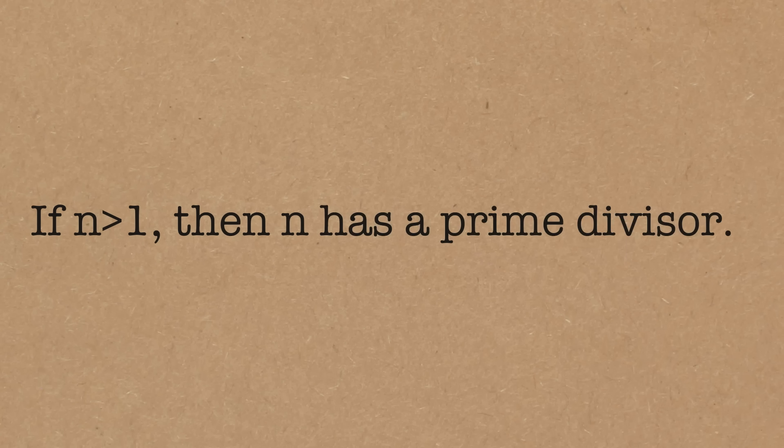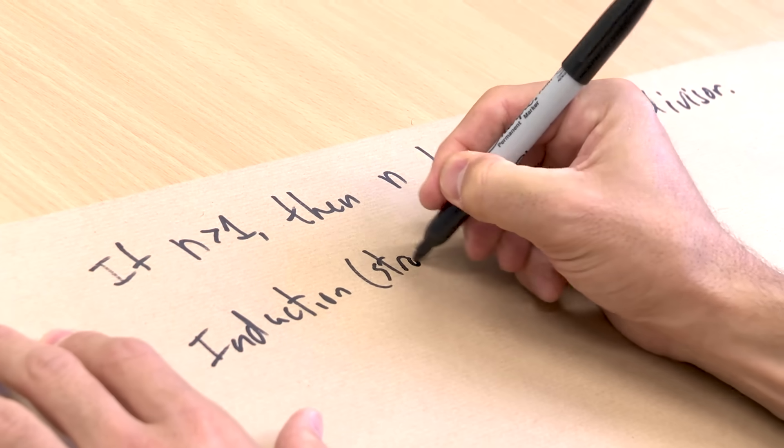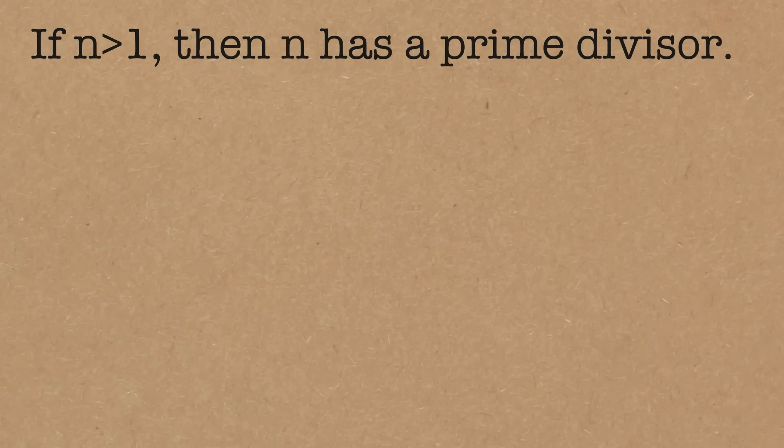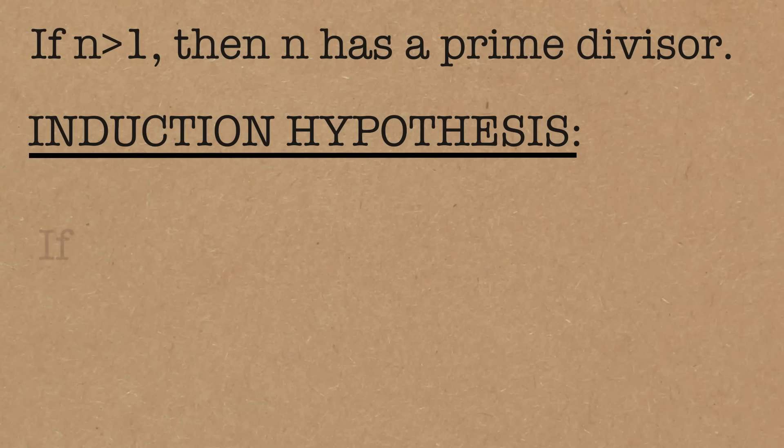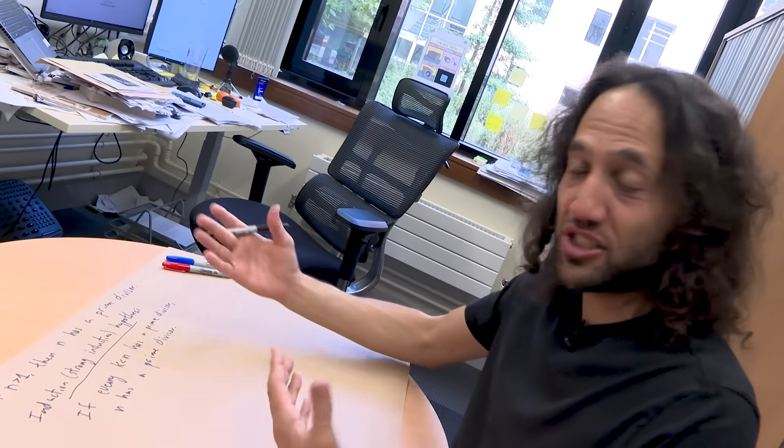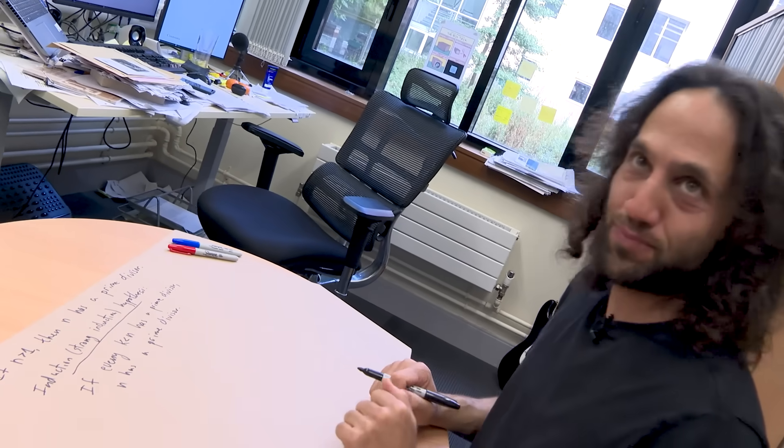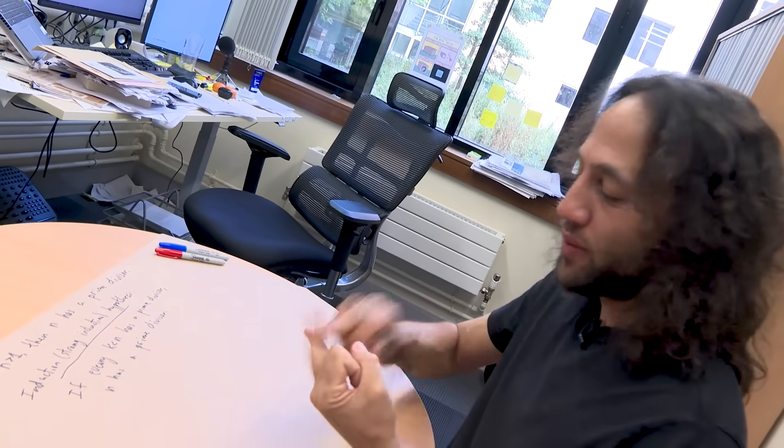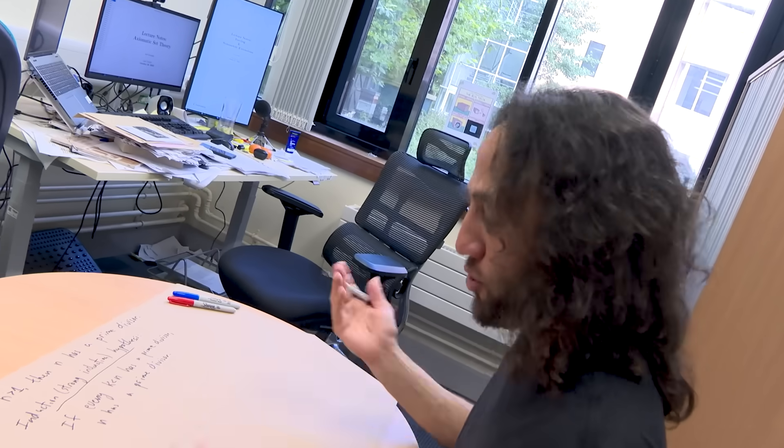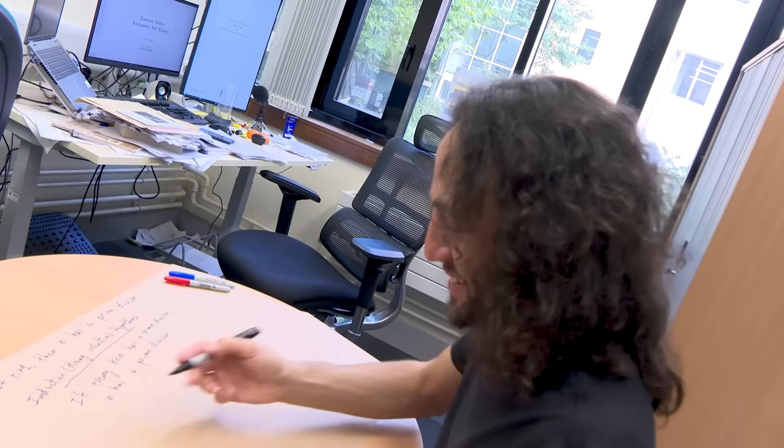So, if n is greater than 1, then n has a prime divisor. This is what we want to show. So, my induction hypothesis now, strong induction, I'm going to call it, is going to be if every k less than n has a prime divisor, n has a prime divisor. So, I'm not just assuming in the case of 6, 5 and 6, I'm not just assuming 5 has a prime divisor. I'm saying 2, 3, 4 and 5 have prime divisors, let me show that 6 has one.